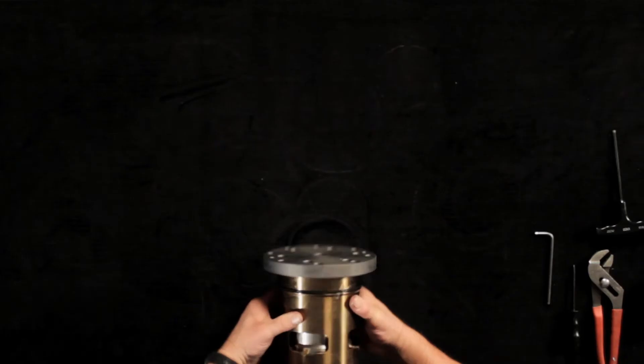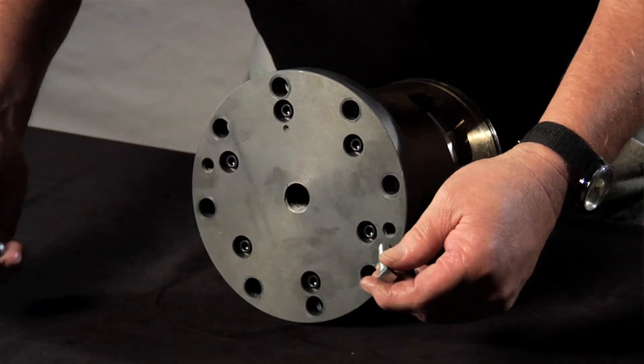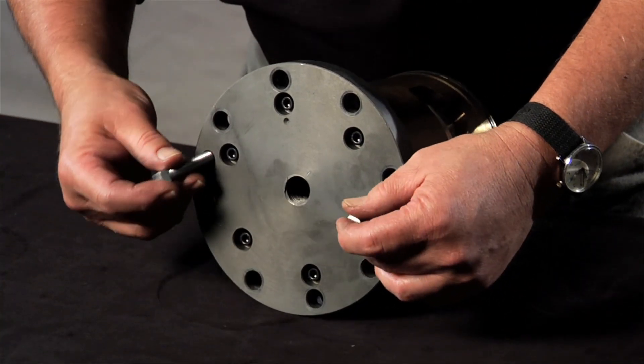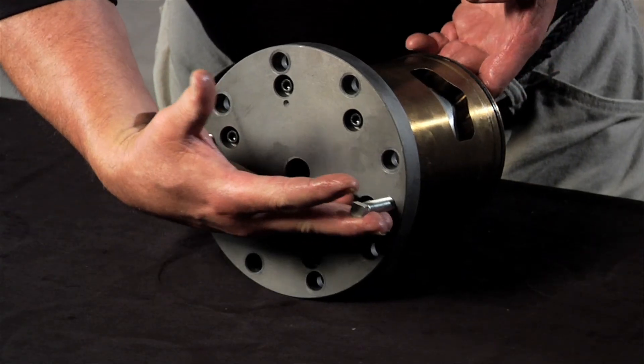Finally, locate the holes for the jack-out screws and install the jack-out screws. These will aid in the extraction of the cylinder assembly from the valve body if required. Your assembly is complete.